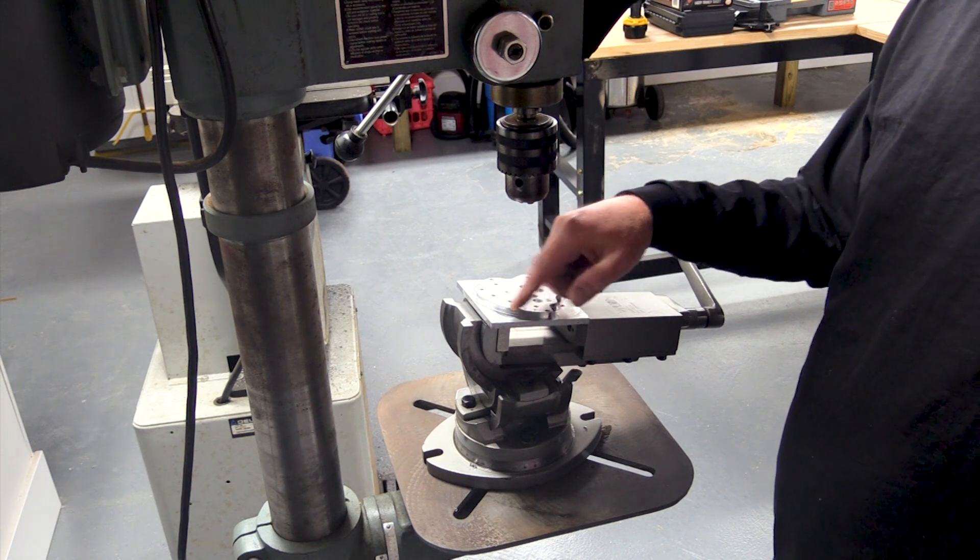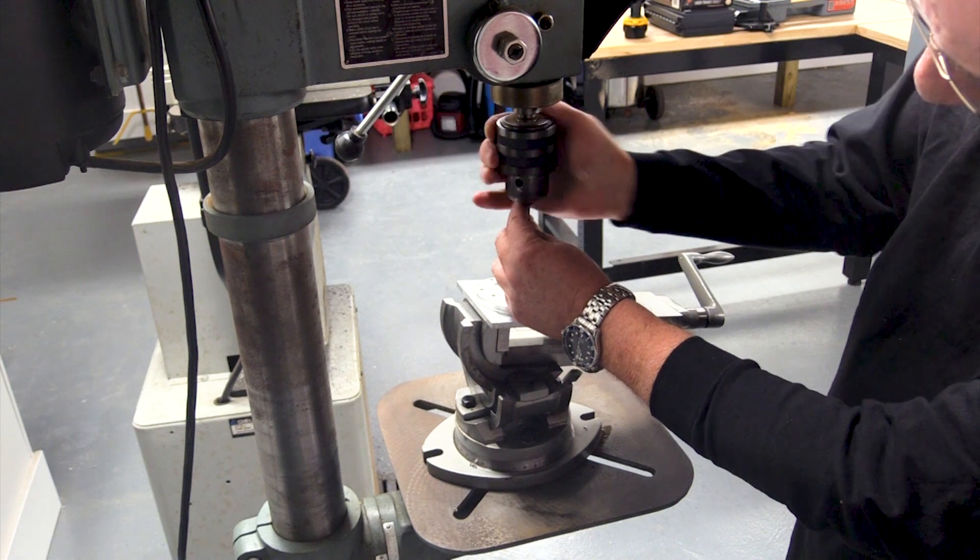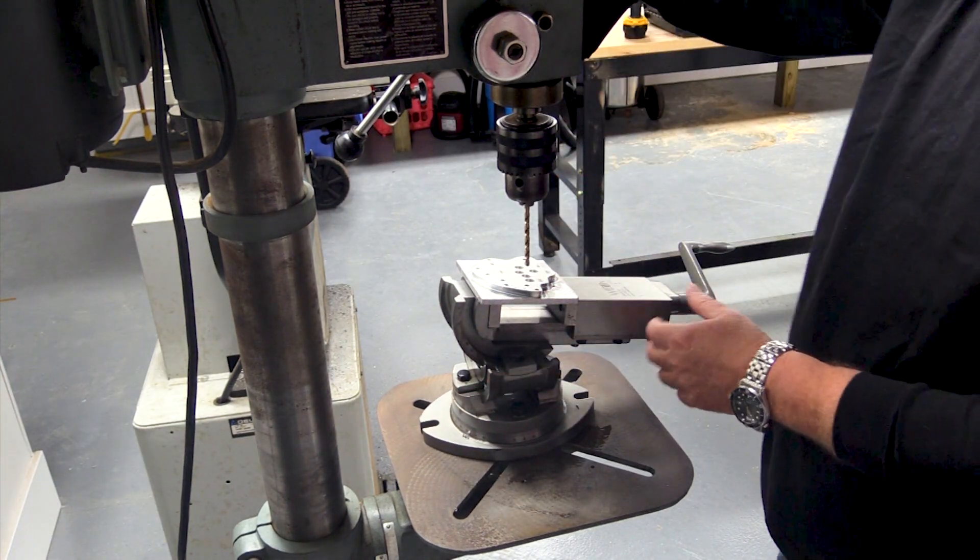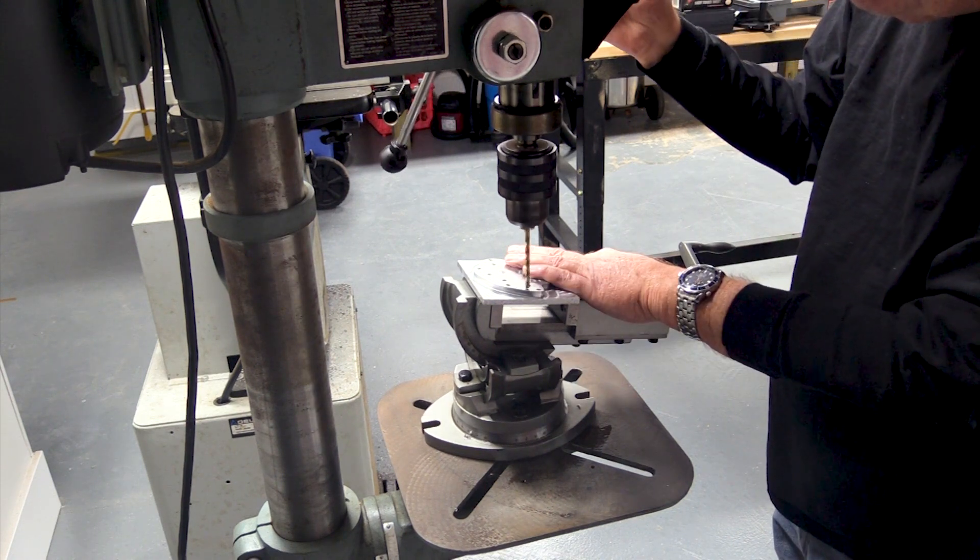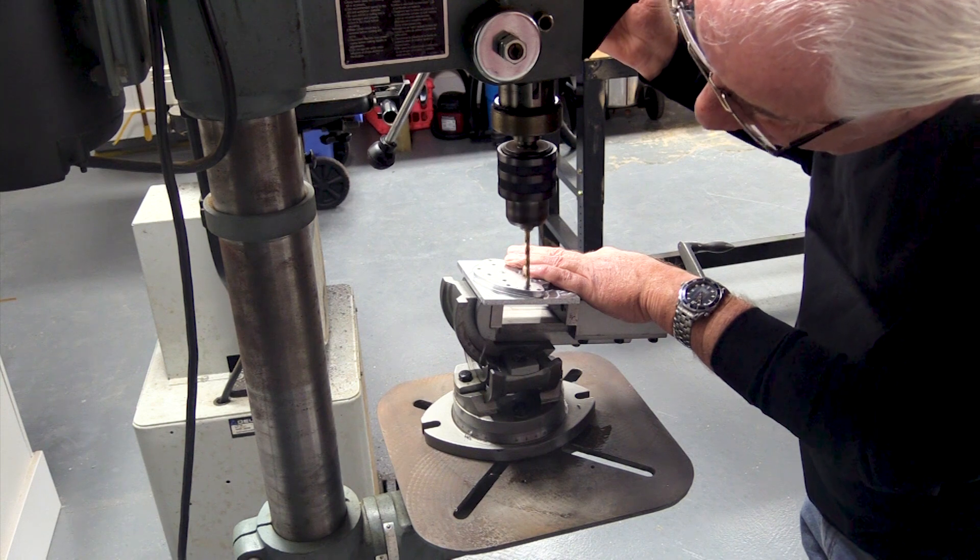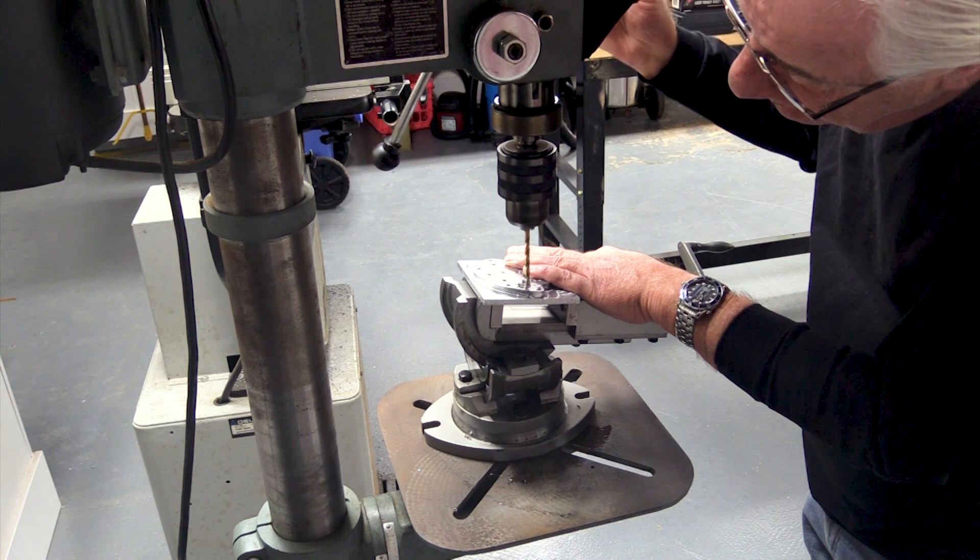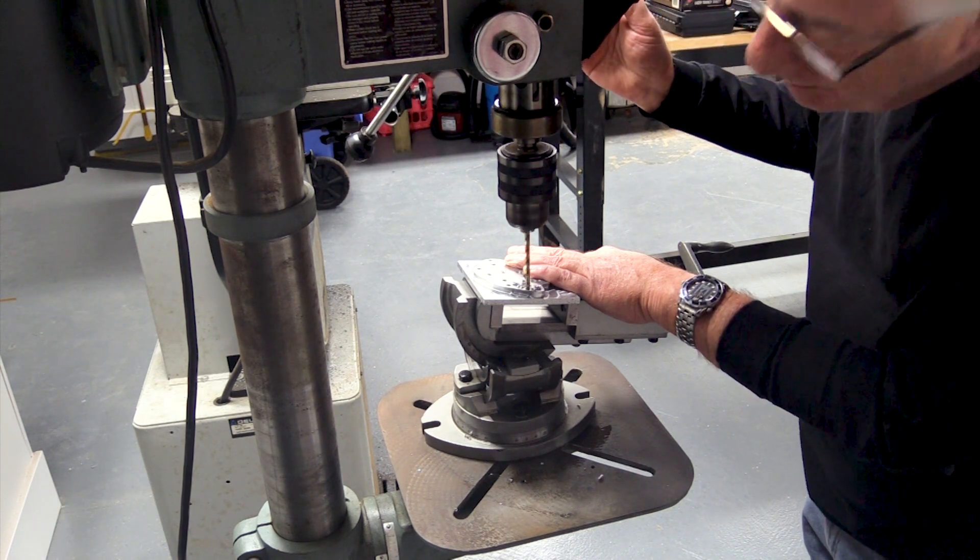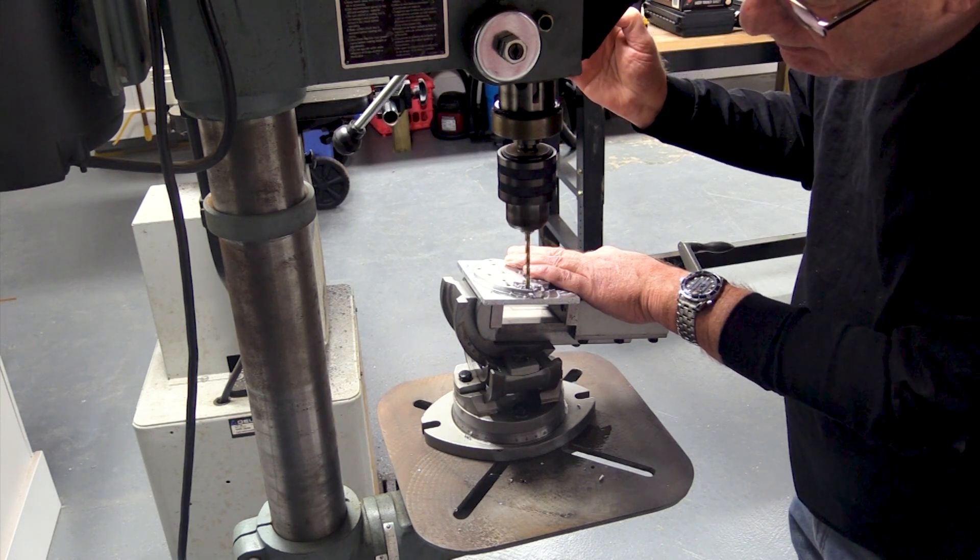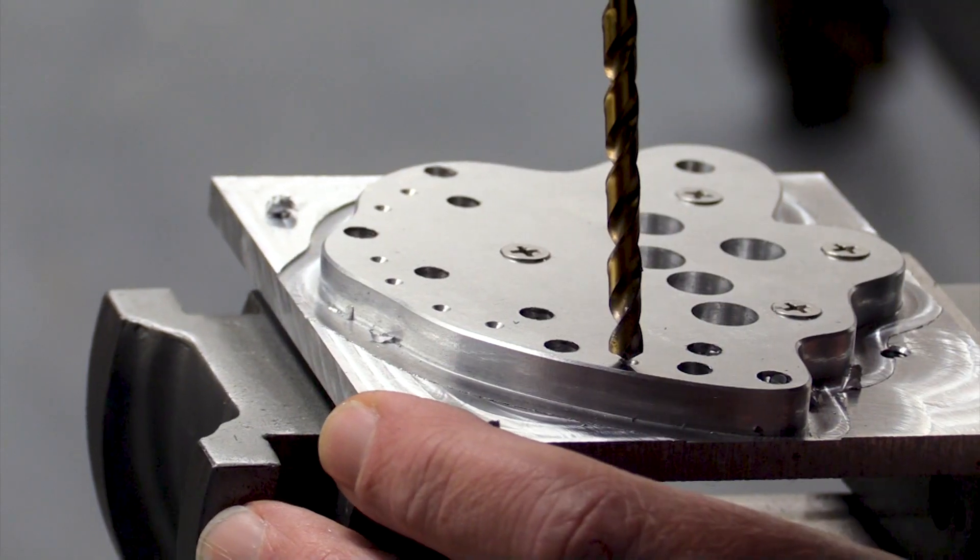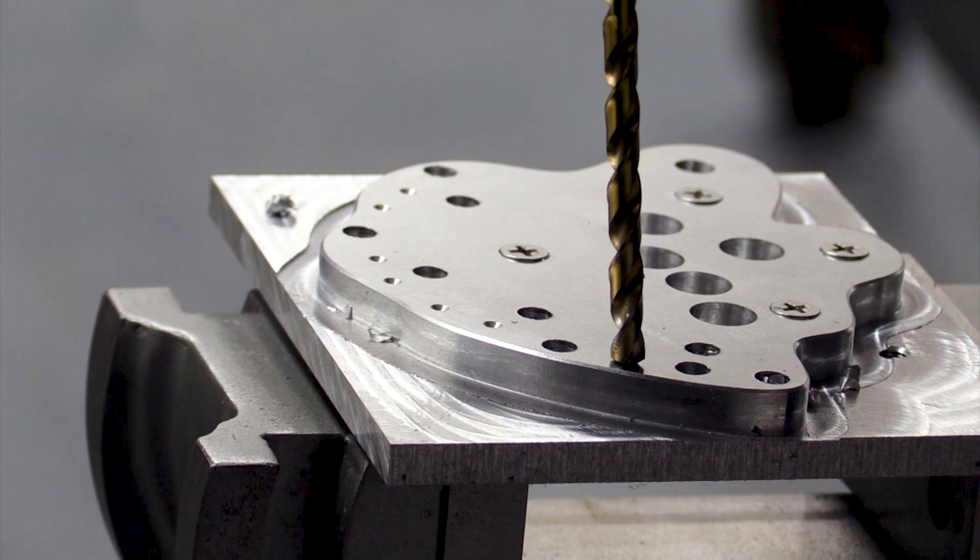I pre-spotted the holes when I was on the mill, so now it's just a matter of lining the drill bit up with those spots and drilling. You can see me lining it up again here. As soon as the bit stops deflecting, it's lined up.